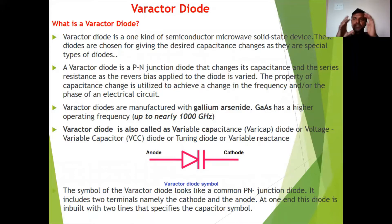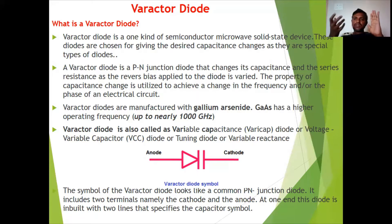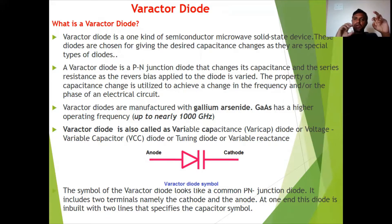A capacitor is formed by two parallel plates with a dielectric medium in between, and its capacitance depends on the distance between the plates. In the varactor diode, the p-type and n-type materials act as the two parallel plates, and the depletion region acts as the dielectric. As reverse bias voltage increases, the depletion region increases, so the capacitance varies.